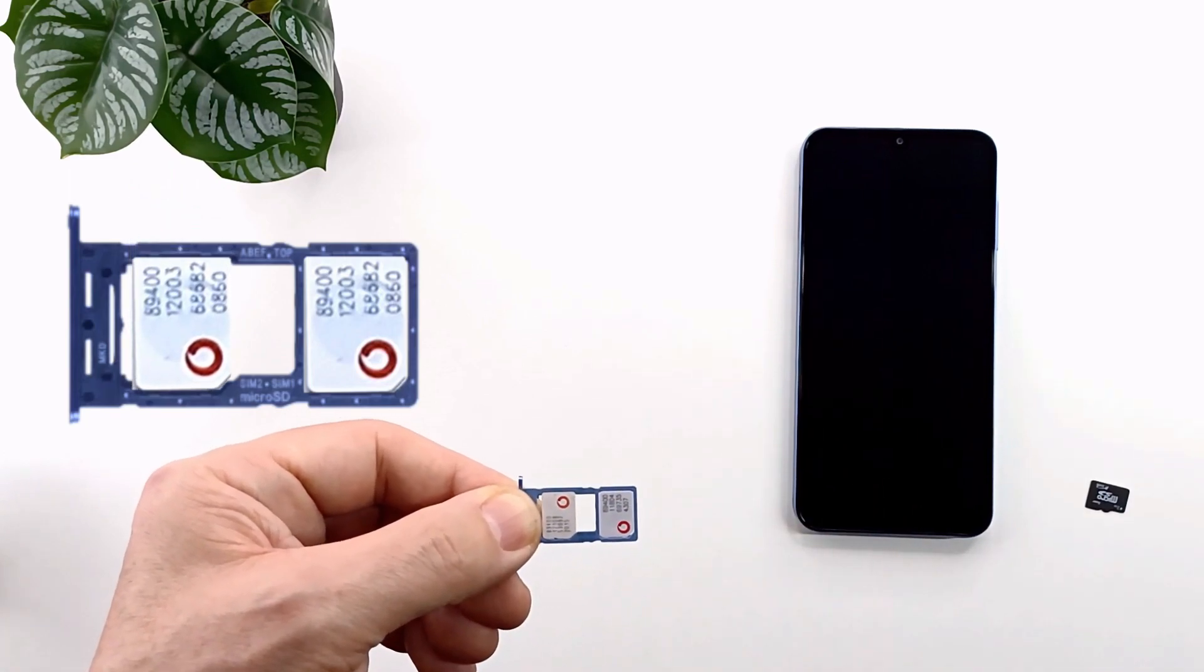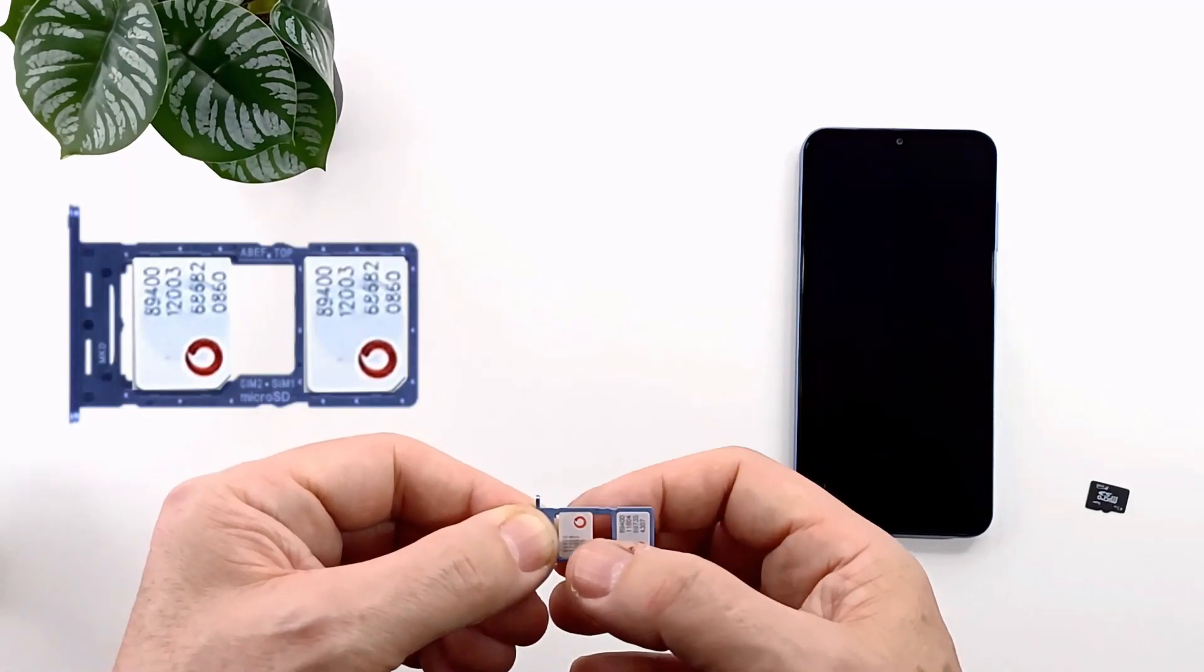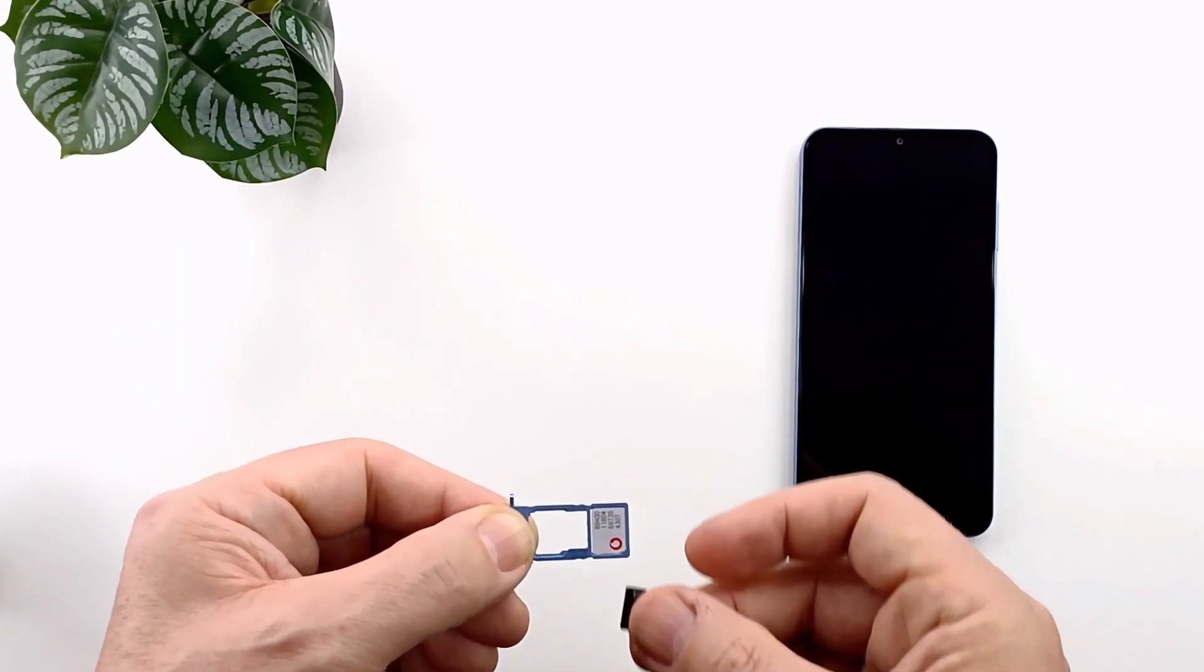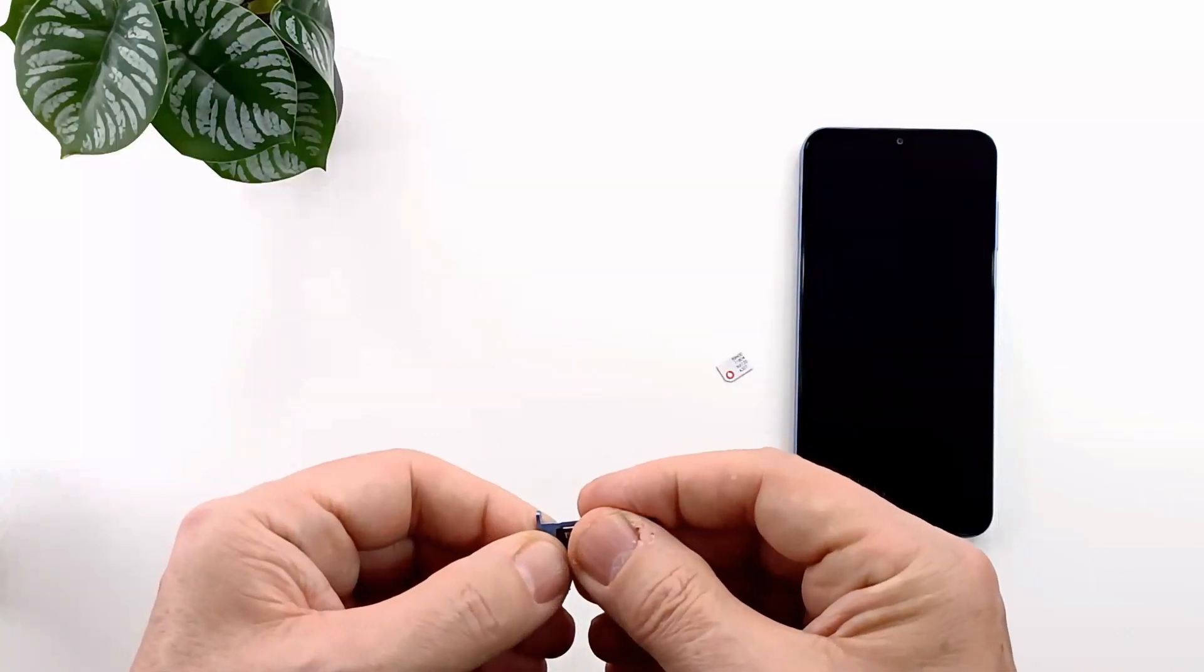Carefully line up your SIM card with the smaller cutout on the tray. Verify the card is flush with the tray, and then insert the SIM tray back into the slot on your device.